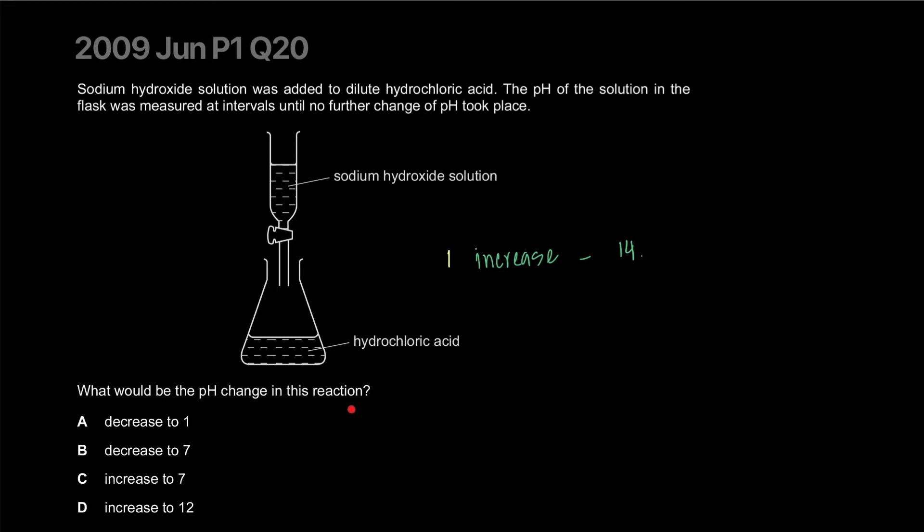What would be the pH change in this reaction? Decrease to one - no, it's going to start at one. You kept adding it until no further change was seen, so it's very close to 12, right. And why is it not 14? Well, depending on what concentration of acid and what concentration of sodium hydroxide used, it probably started slowing down. Maybe it's a very dilute solution being added to a very dilute acid. The correct answer is D.